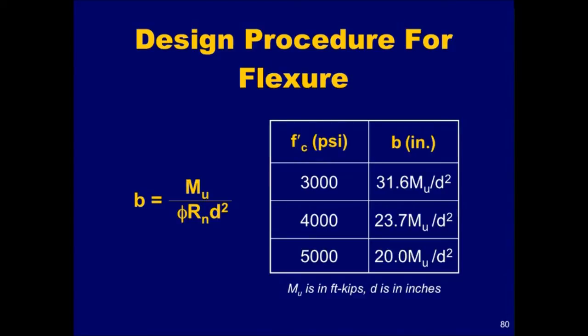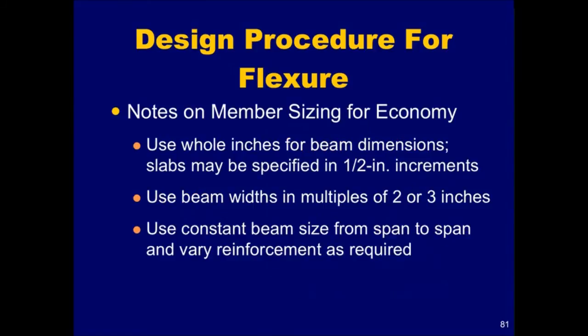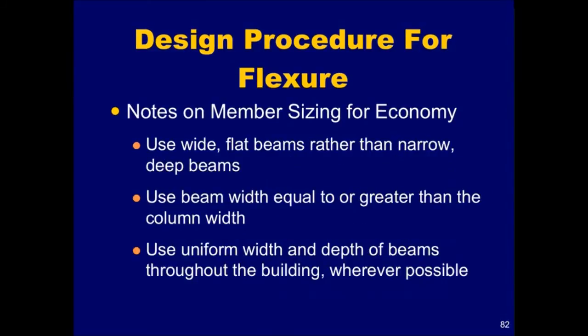This table can be used to determine the required width of beams for various concrete compressive strengths. It is important to reiterate that d has been determined considering deflection requirements. Thus, providing a beam width equal to at least the value from this equation will satisfy both strength and deflection requirements of the code. A few general guidelines on how to choose beam and slab dimensions are shown here. Following these guidelines can usually result in considerable cost savings. More information on economical formwork will be covered later in this module.